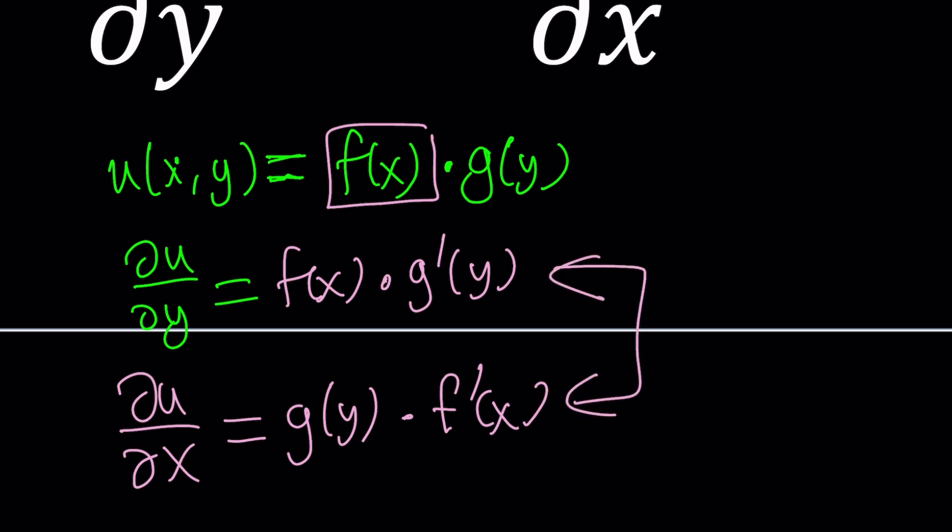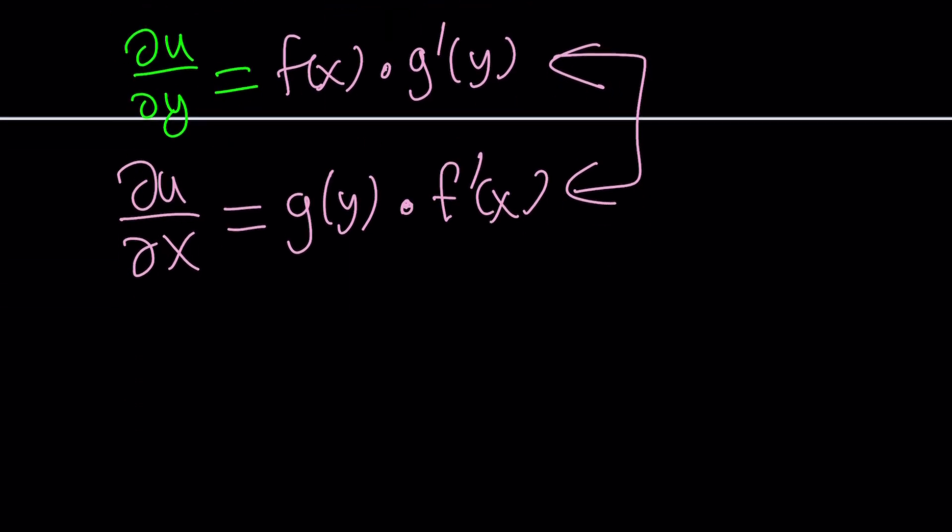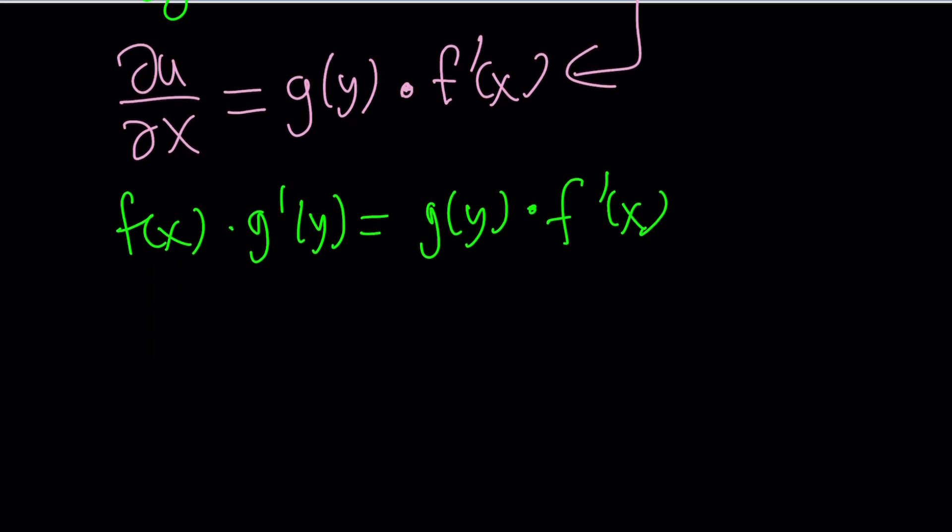And notice that this is going to turn into something super duper nice. Let's go ahead and see if we can set these equal to each other. f of x multiplied by g prime of y equals g of y multiplied by f prime of x. Now, we want to go ahead and put the same variables on the same side. So let's go ahead and put the y's together. g prime of y divided by g of y equals f prime of x divided by f of x.